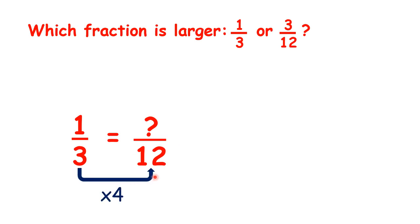Well, three times four is twelve, one times four is four, so because one-third is the same as four-twelfths, we can see that it's bigger than three-twelfths.